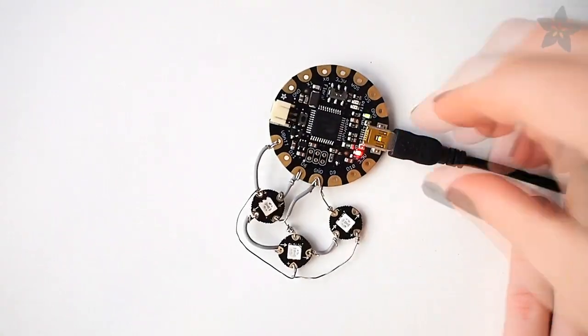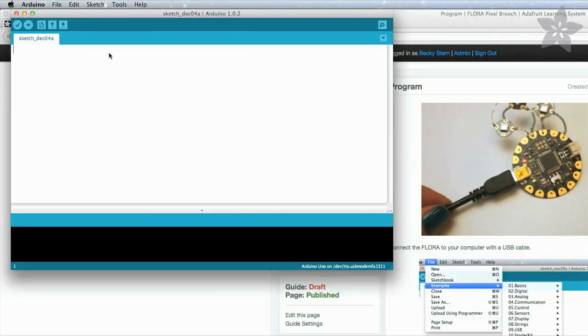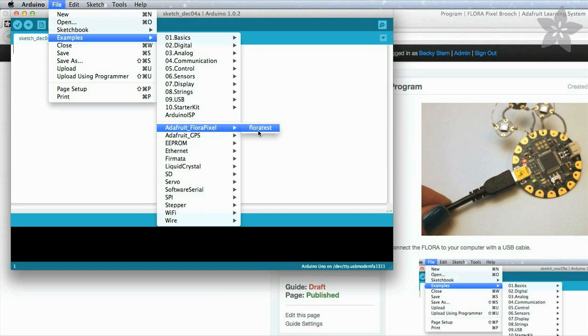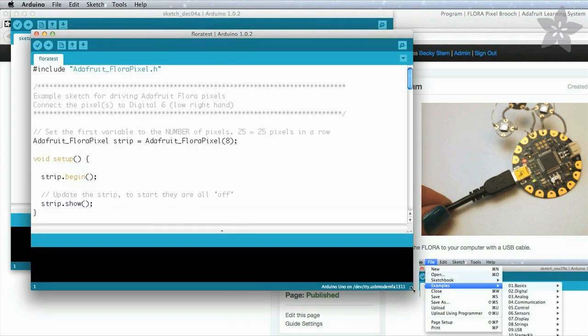Next plug in your USB cable. You can download the Flora software from the getting started with Flora guide and it's a modified version of Arduino with all of the changes for Flora baked right in.